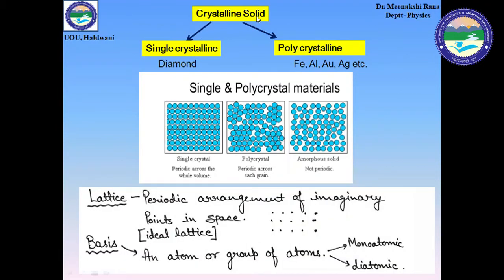We can also classify the crystalline solids into two parts: single crystalline and polycrystalline. In single crystalline, the periodicity of the atoms or molecules extends over the whole volume — diamond is a good example. In polycrystalline, there are grains where periodicity exists locally, but across the whole crystal the periodicity is divided into different grain boundaries.